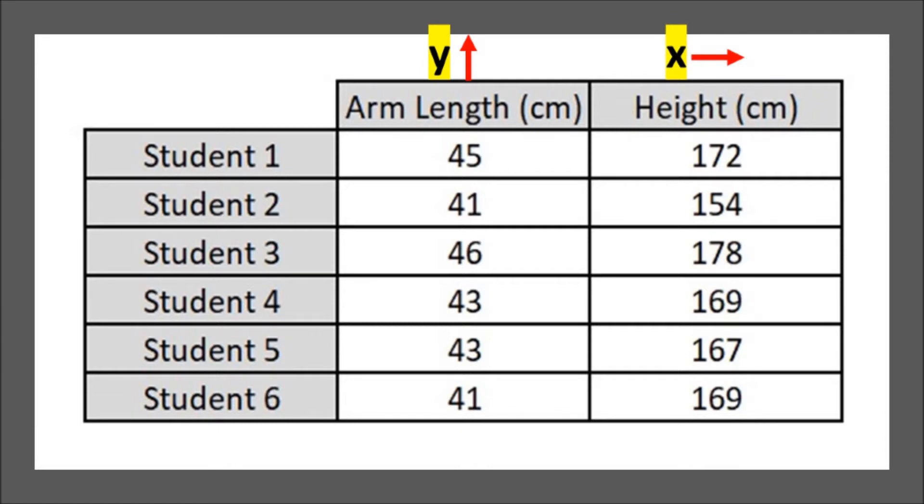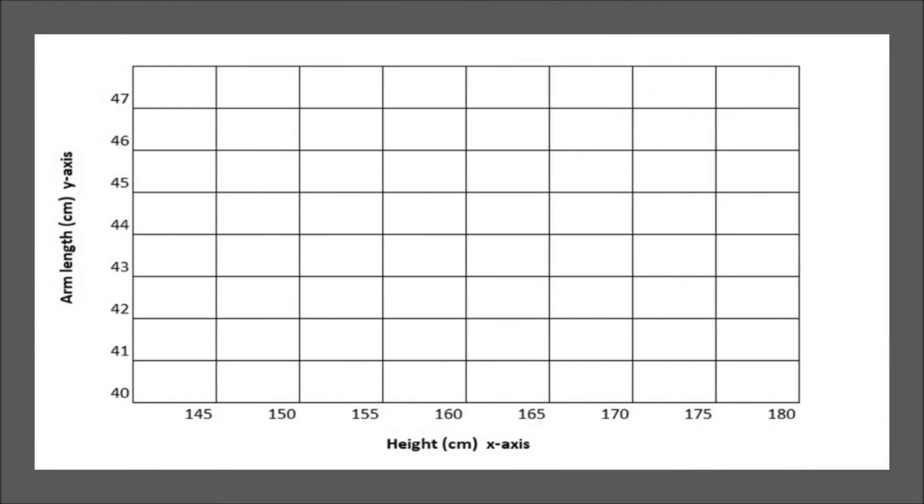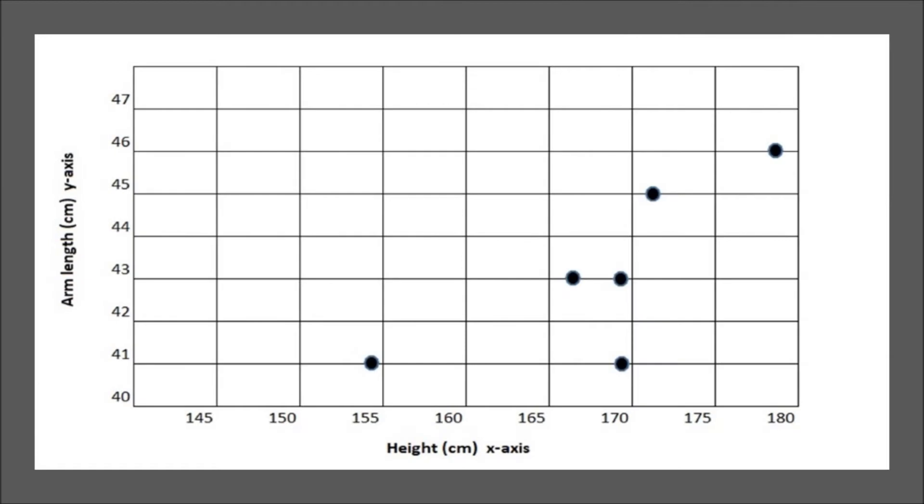Here's our graph with the points plotted. Many of you may be used to points in algebra where they're in a linear setup, but here the data throws your points all over. This is what we call a scatter plot.